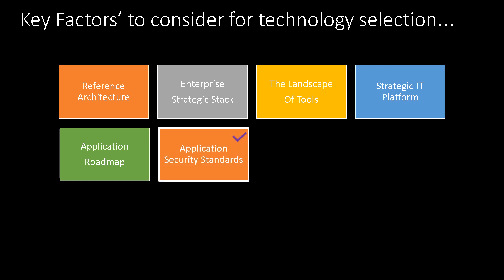Another critical factor is that your technology selection should support developing a secure application. Generally, banking or health applications must comply with certain security standards like HIPAA, so your selection should be able to meet those standards. For example, Fintech platforms are usually built using Java or .NET because of regulatory and compliance requirements.